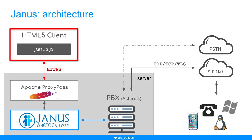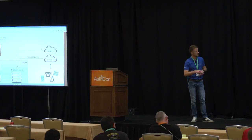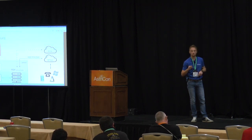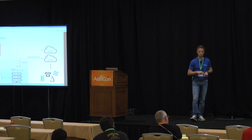This is the architecture used with Janus. It differs from that of SIPML5 because the client now only requires the Janus JavaScript library. It communicates directly with the Janus Gateway component on the server, which in turn has the responsibility to operate with Asterisk using the SIP protocol. All the traffic is proxy-passed by the Apache web server using the HTTPS protocol.